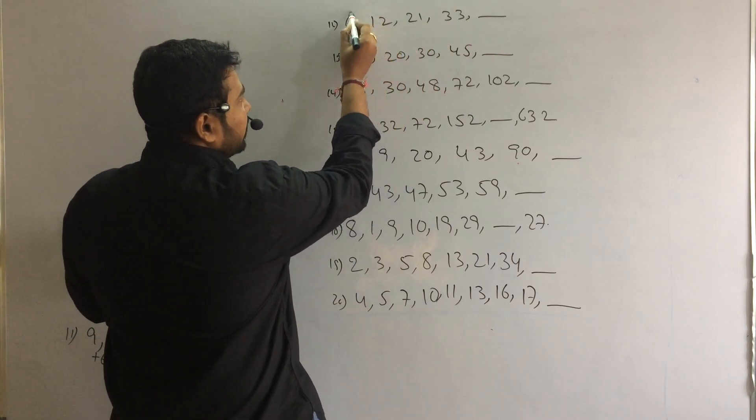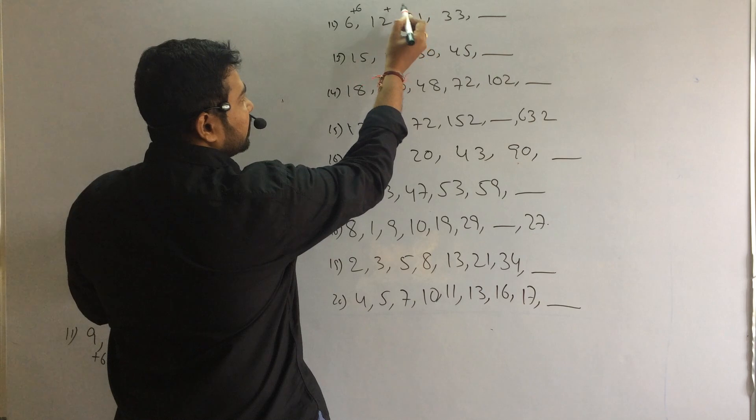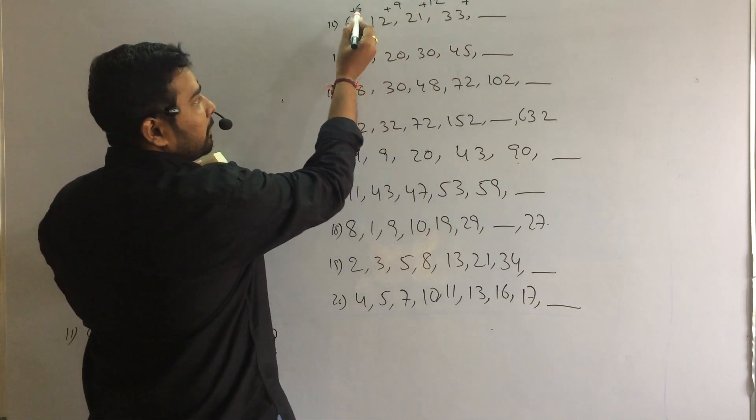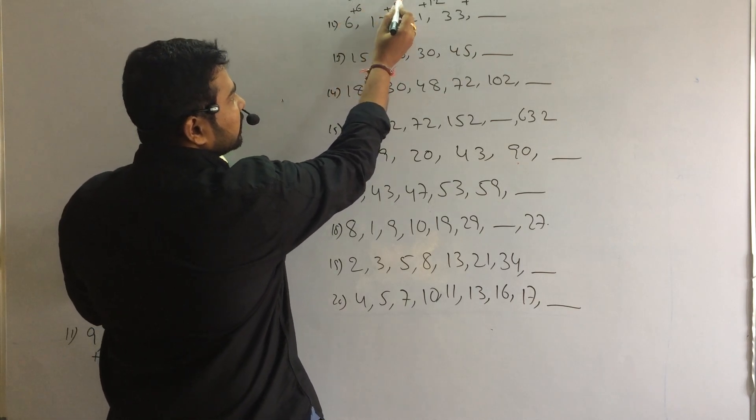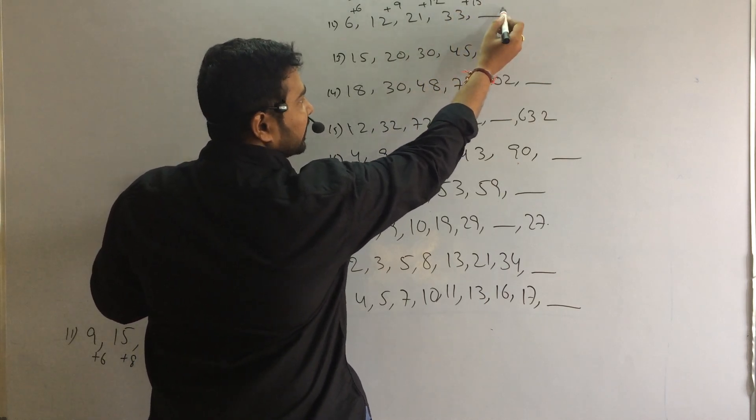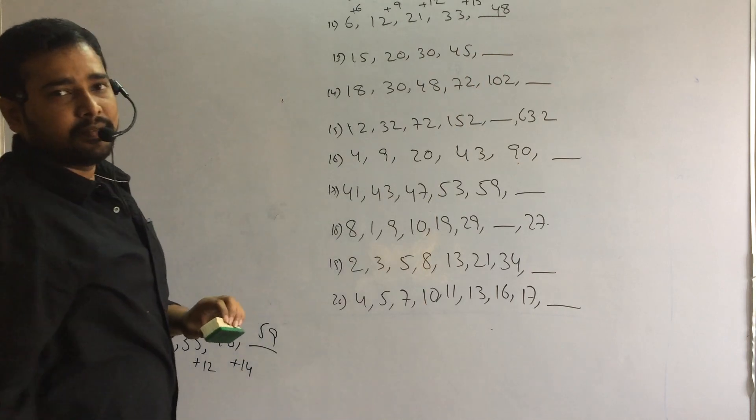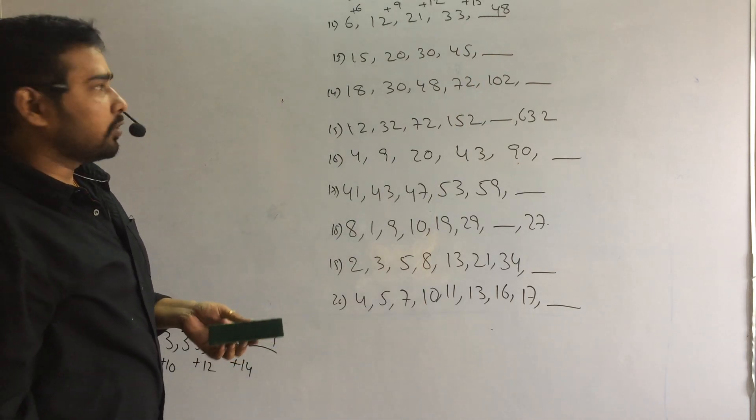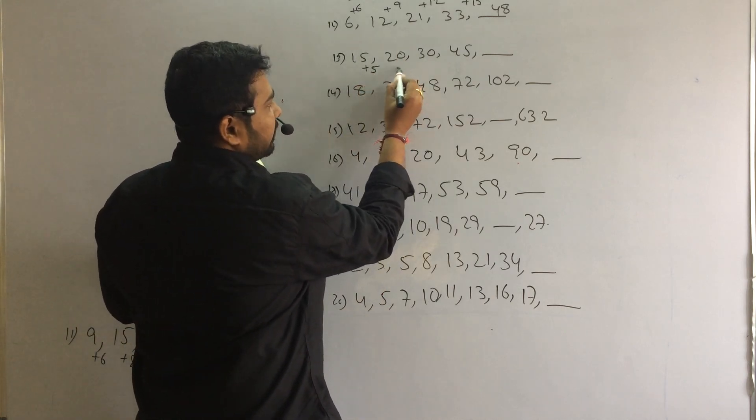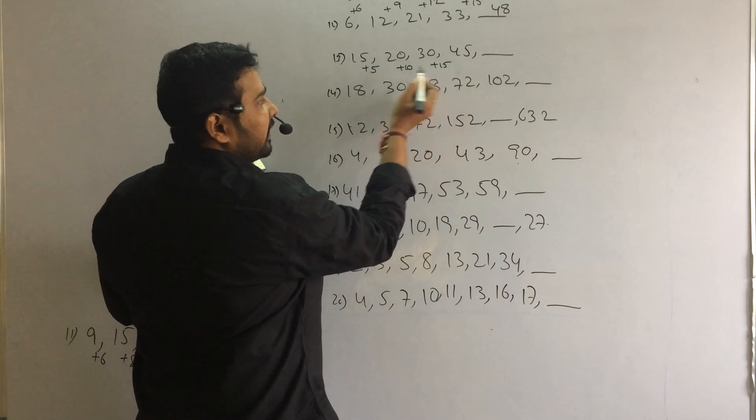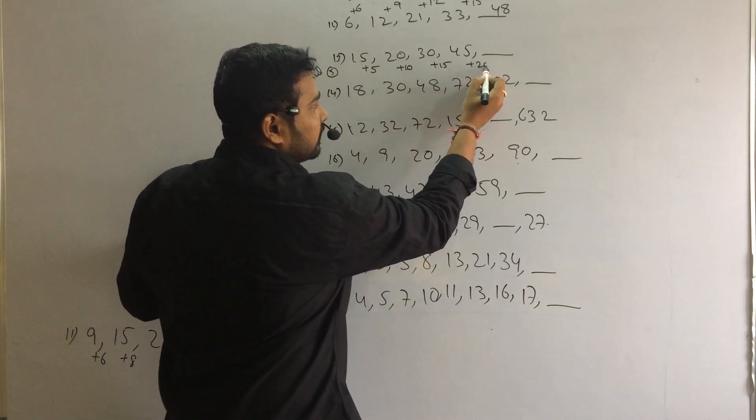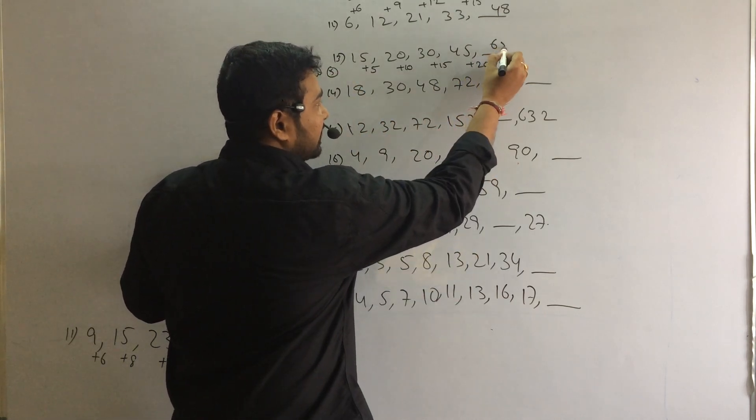Here difference is very normal. Difference is 6, 9, 12. The difference is a multiple of 3s. 3 twos, 3 threes, 3 fours, 3 fives are 15. If you add 15 to 33, answer is 48. So multiples of 3.